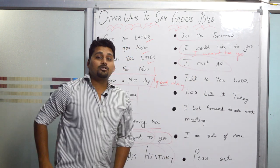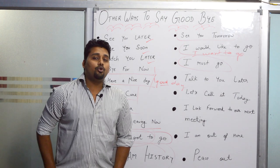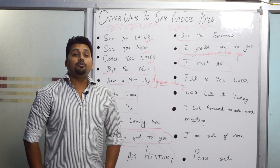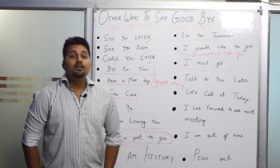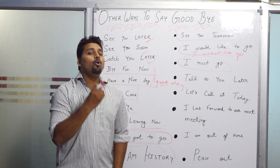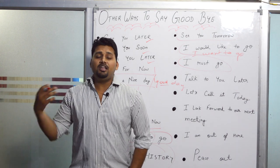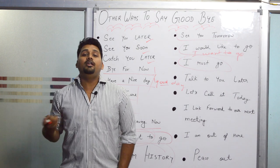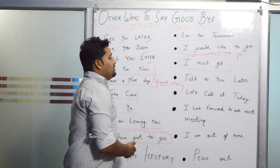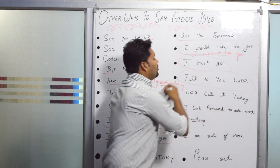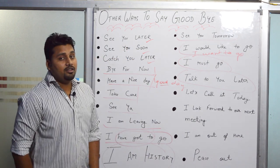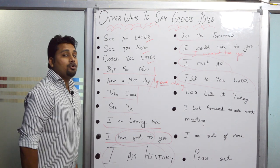Next, 'I must go' means you are just about to leave. For example, if you have a political match to watch, or a meeting to attend, or you need to prepare something important, you say 'I must go' or 'I must go from here.' Next is 'Talk to you later,' meaning you will talk to that person again — it's another informal way to say goodbye.